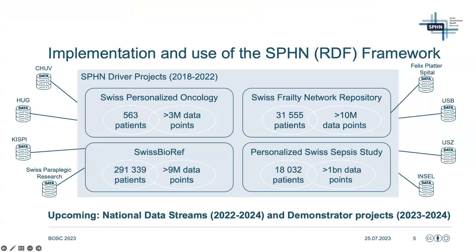On the implementation side, a couple of driver projects have already received data from different Swiss university hospitals and other partners between 2018 and 2022, with the number of data points varying between millions and even billions. Since 2022, the national data streams have been launched, expecting data in RDF with the purpose of building a common knowledge graph. We can state that the SPHN semantic interoperability framework is being put into use in the Swiss community.